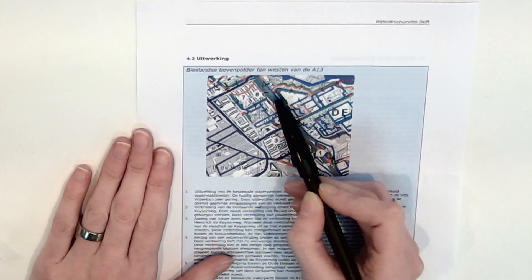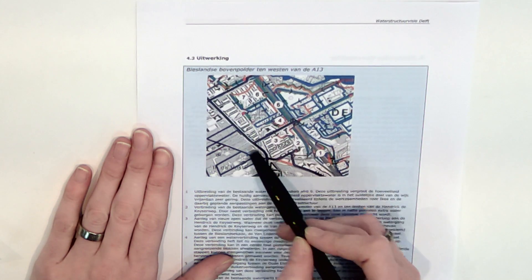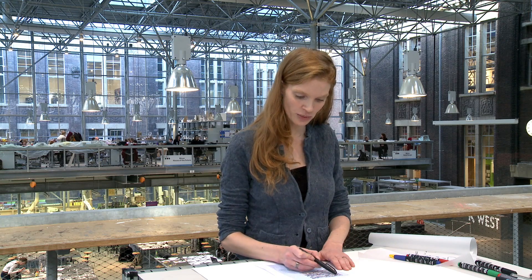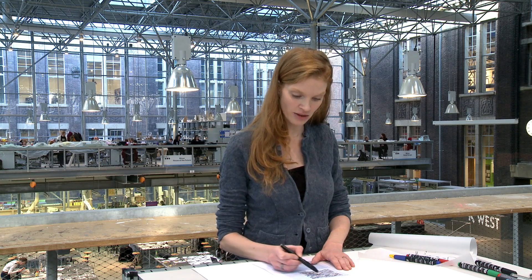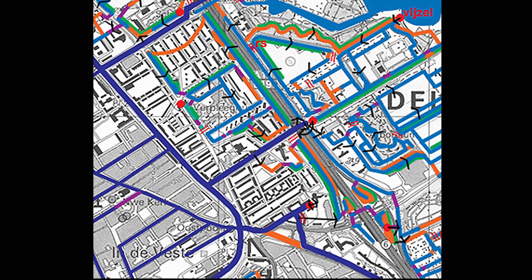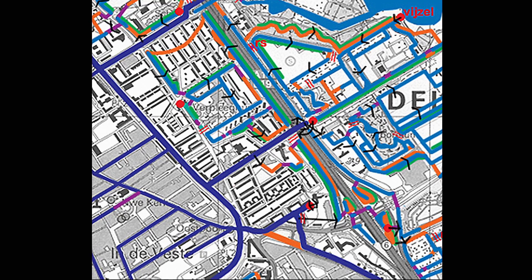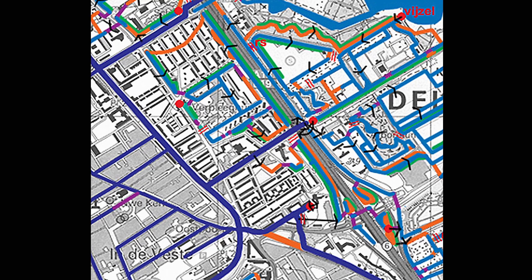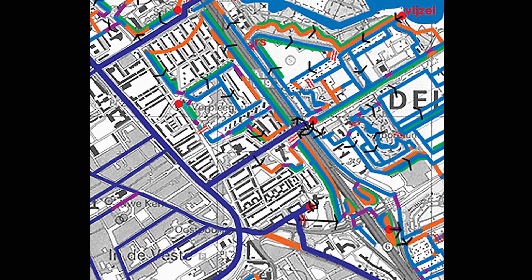Here we can see it on the map: the historic city centre of Delft and the Bieslandse Bovenpolder. In orange we see the new connections that ensure the water can circulate. In green, the ecological embankments. And in purple, the missing links underground that make sure the whole system is connected.